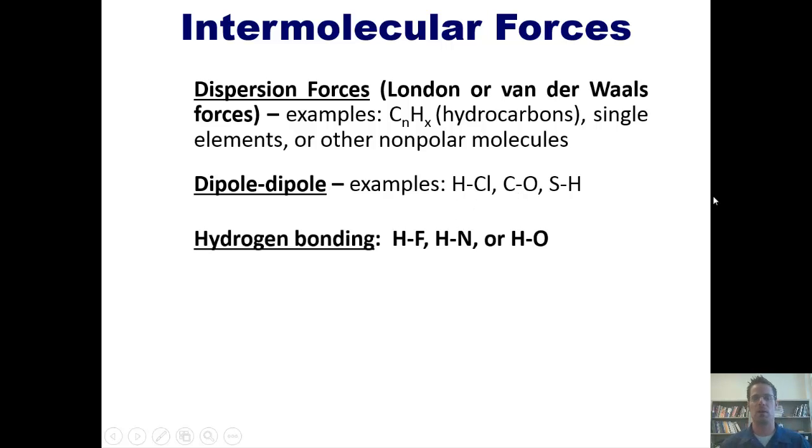The next is hydrogen bonding. This is a kind of dipole-dipole that is super strong, and it's specific to hydrogens that are bonded to nitrogen, oxygen, or fluorine. Because those three elements are so much more electronegative than hydrogen, you have a very intense partial negative charge on them while you have an analogously intense partial positive on the hydrogens.